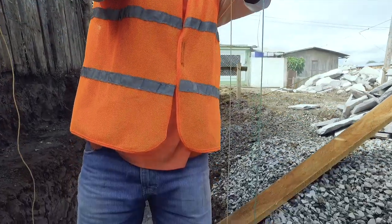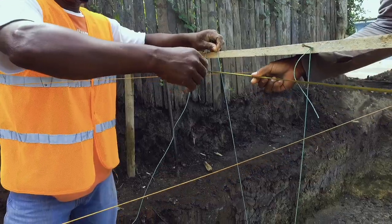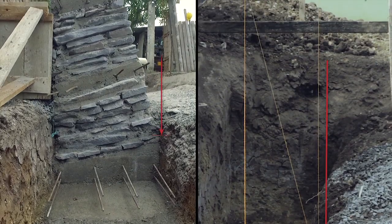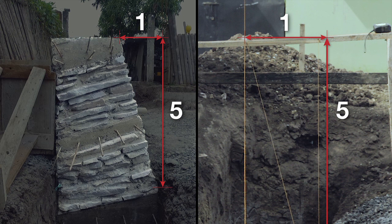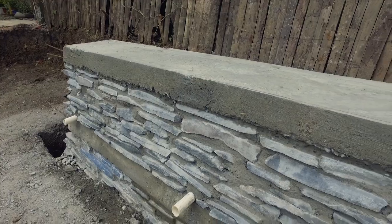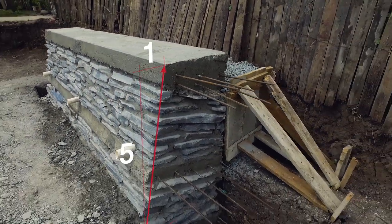Inclination. The front of the retaining wall must be tilted towards the slope in a ratio of 5 to 1. This means for every 5 cm up, lean back 1 cm. The back of the retaining wall, the invisible one, must be vertical. This inclination ratio of 5 to 1 gives stability to the wall and balances the loads.